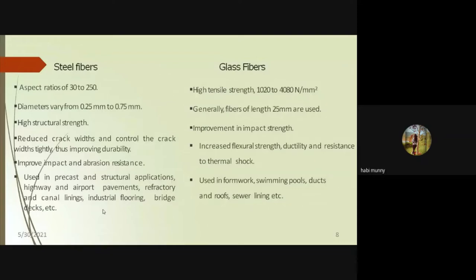Comparing steel, glass, and polypropylene fibers: steel fibers have an aspect ratio of 30 to 250, high structural strength, and reduce cracks — used for pavement construction, industrial flooring, and bridge decks. Glass fibers have high tensile strength of approximately 1,020–2,408 N/mm², are typically 25 mm long, improve impact and flexural strength, and are used in swimming pools, roofs, and sewer linings.